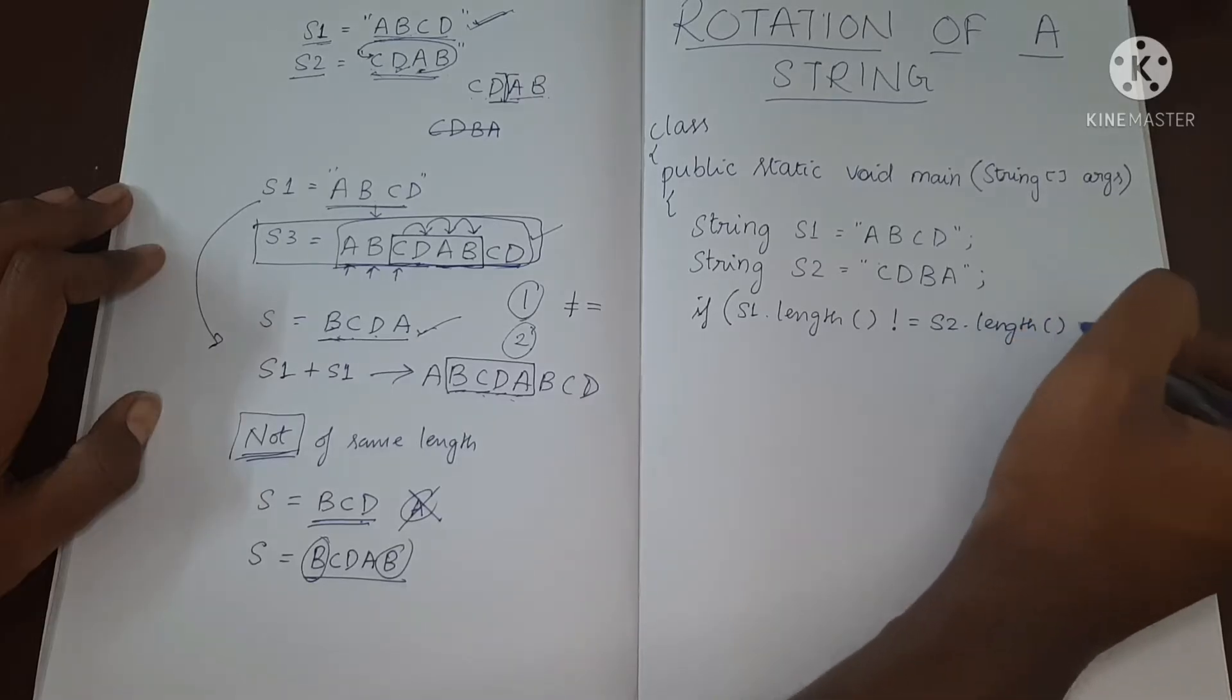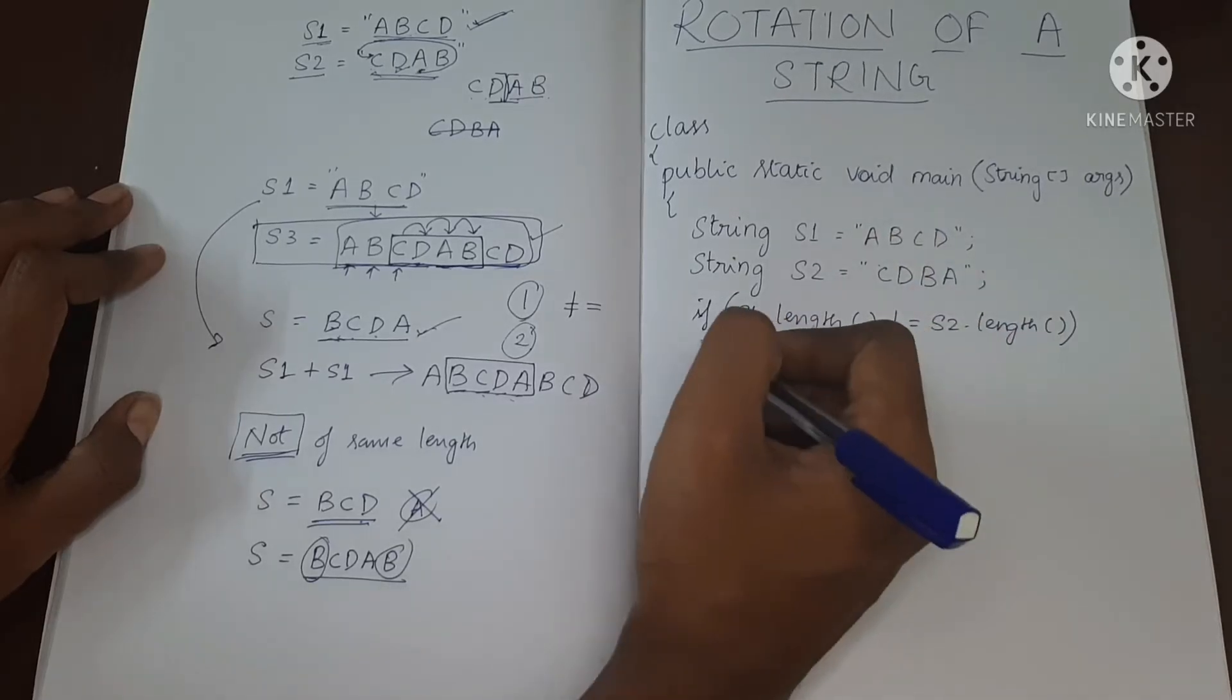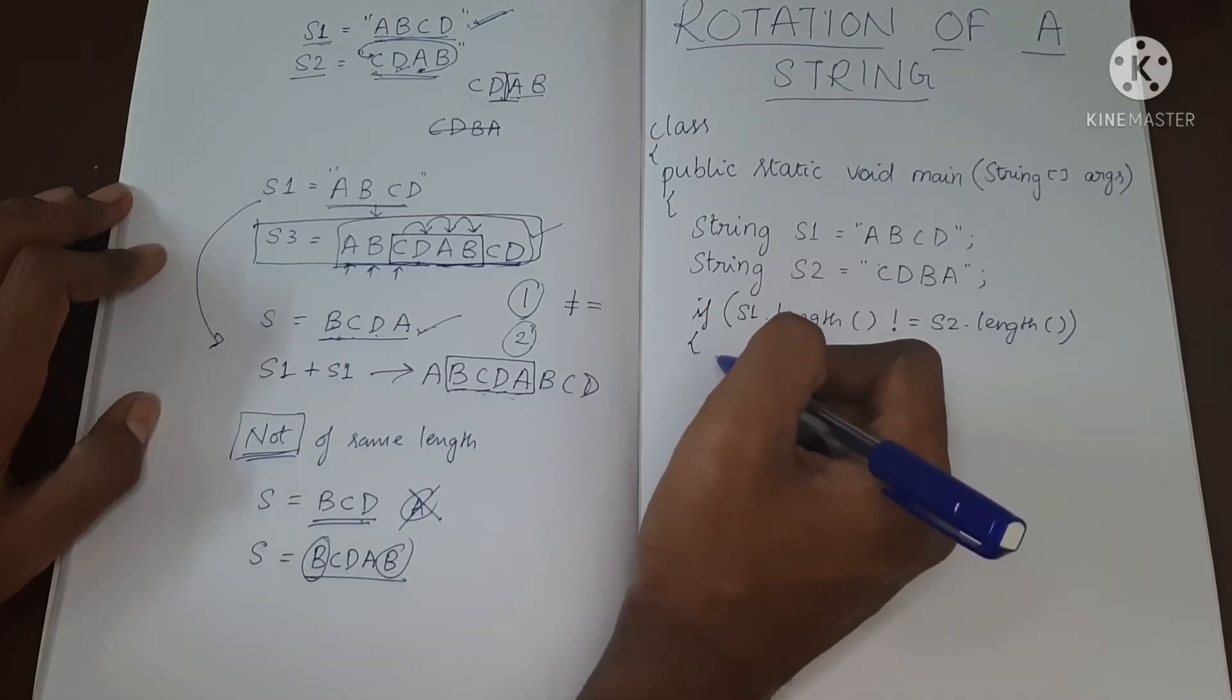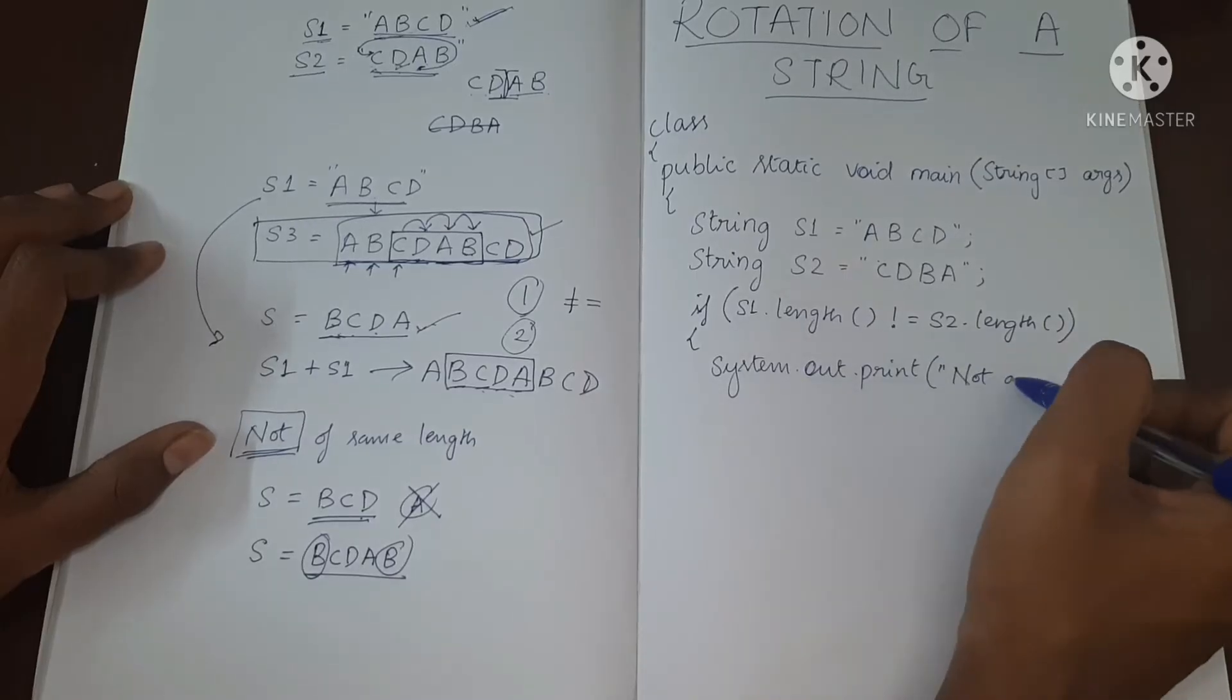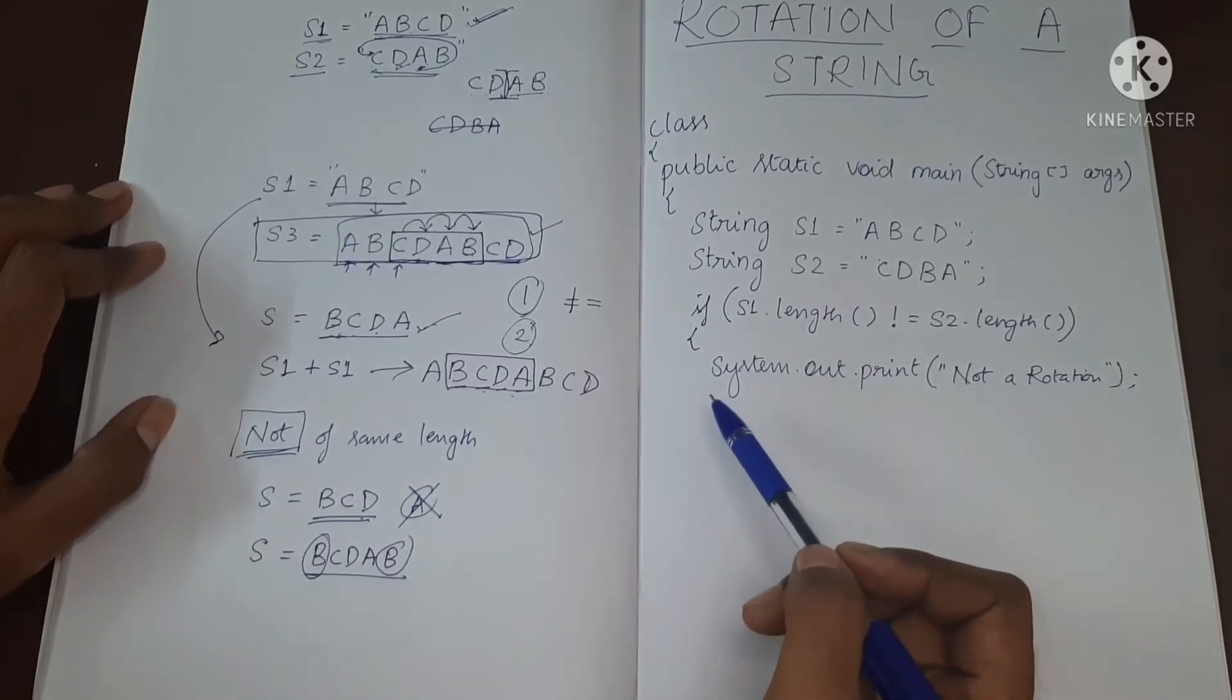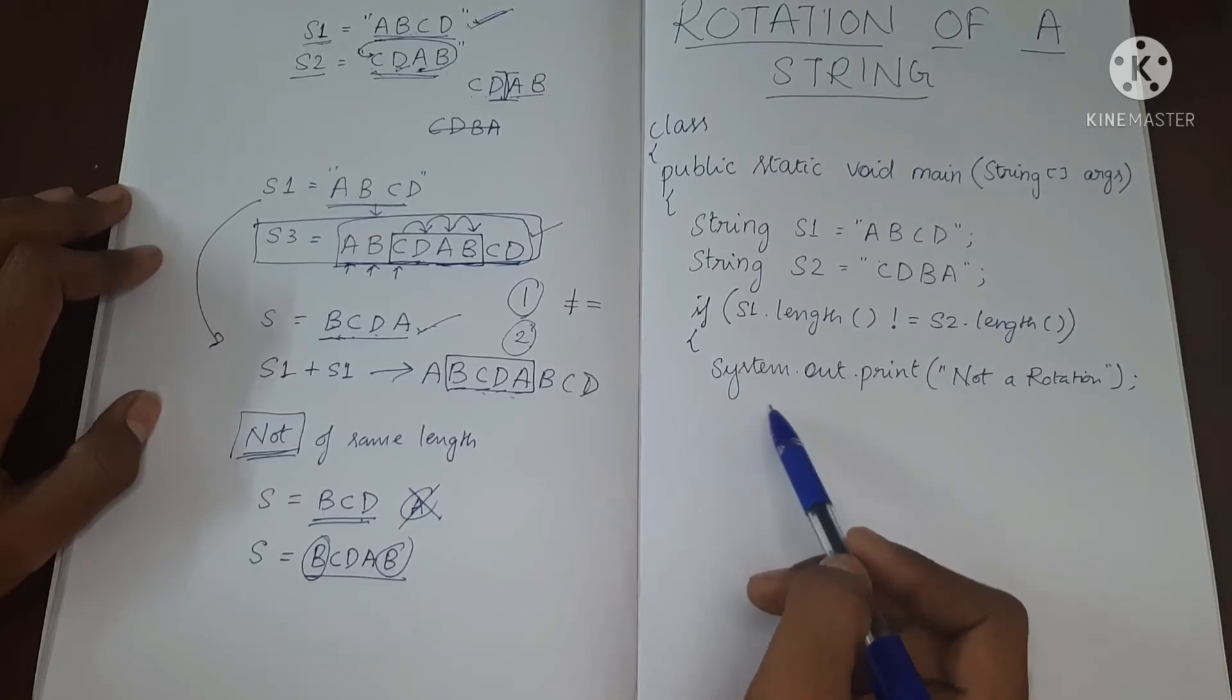I just explained that they are not equal. It means they cannot be a rotation of each other. So I need to print that it is not a rotation. And since it's not a rotation, we can simply terminate the program over here.